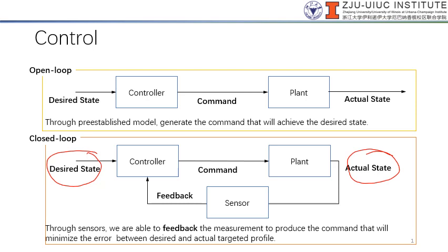And in this case, for open loop situation, your desired state will map over to your actual state after going through the controller as well as the plant.